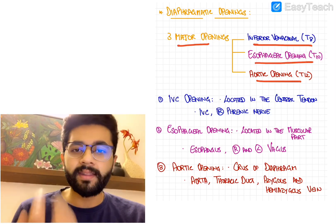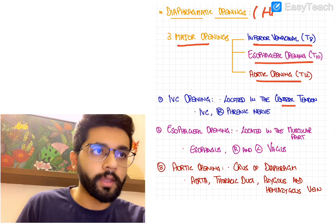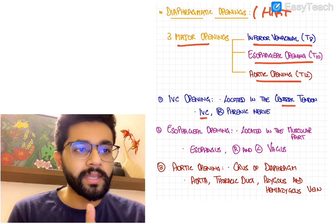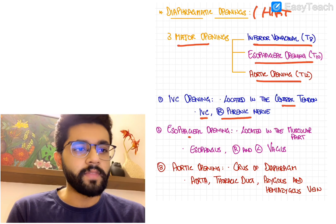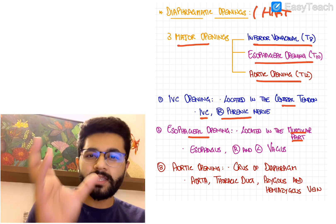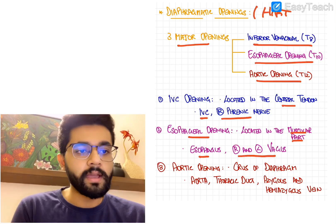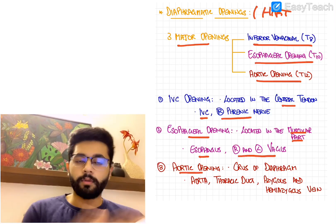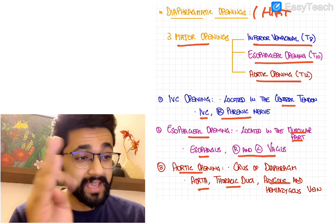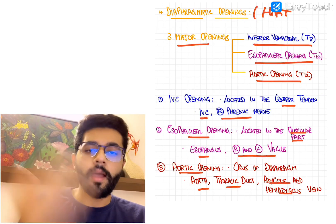The IVC opening is located in the central tendon of the diaphragm — through this pass the inferior vena cava and the right phrenic nerve. The esophageal opening at T10 is in the muscular part of the diaphragm, through which the esophagus and the right and left vagus nerves pass. The aortic opening lies between the two crura of the diaphragm, through which pass the aorta, thoracic duct, azygous, and hemiazygous vein.